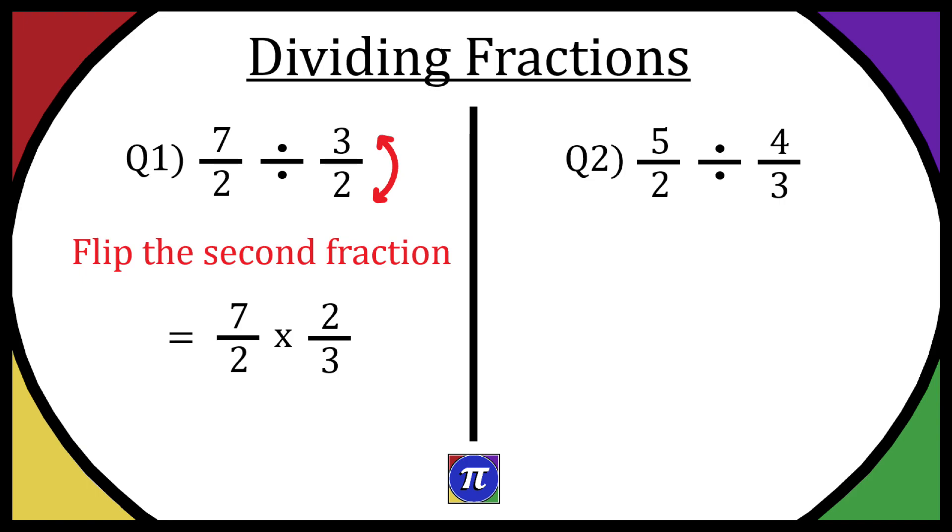If we flip the second fraction over, it gives us 7 over 2 times 2 over 3. From here we can just times the top and times the bottom. That's going to be 14 over 6, and that can simplify to 7 over 3 because you can divide the top and bottom by 2.